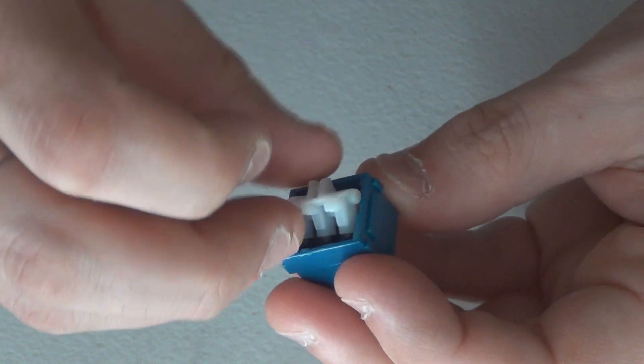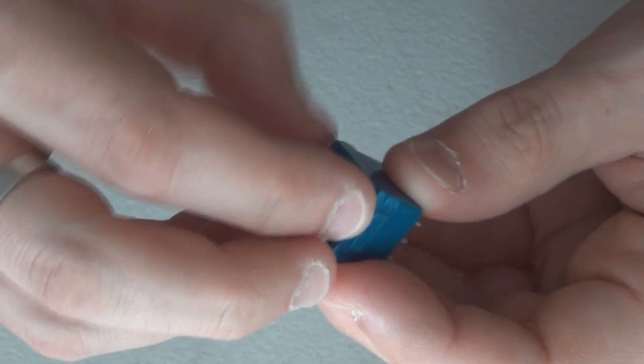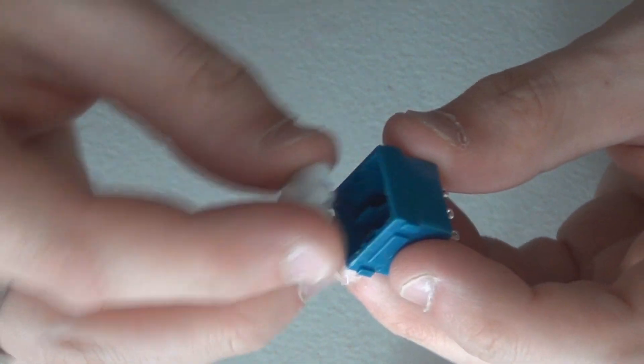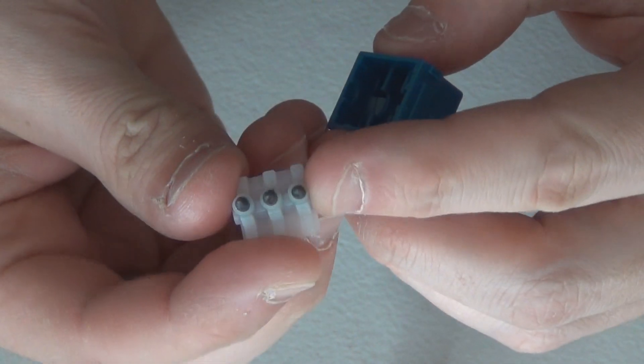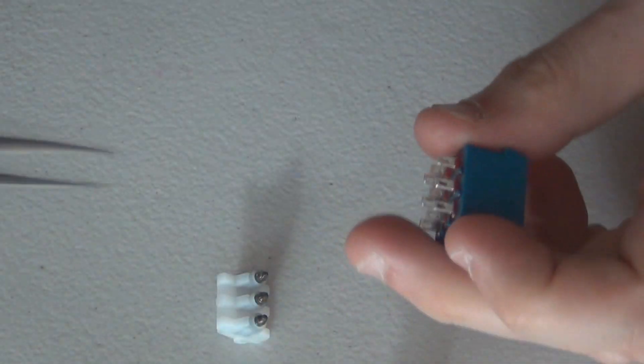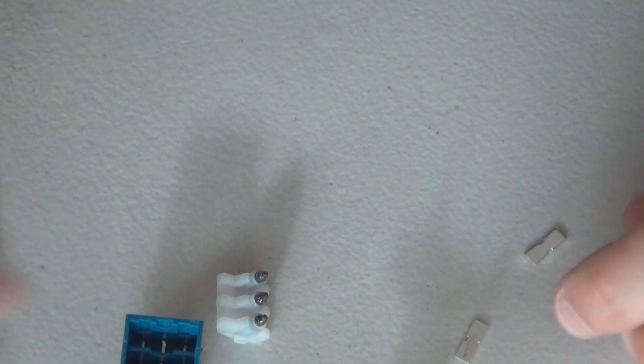If we take a look at the inside now you can see there's this rocker seesaw piece that rocks back and forwards when you push down the plunger and on the bottom of that there's these little pivot points. All these pieces will make sense in a moment when we get these little contacts out.